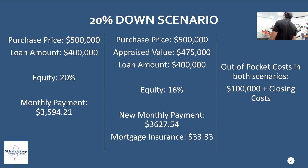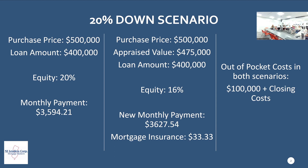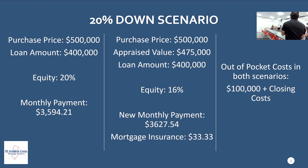That's the 20% down scenario. The big thing everybody asks is: do I have to come out of pocket extra? You are coming out of pocket for the same amount — $100,000 down plus closing costs — nothing is changing in terms of how much money you were prepared to spend from the beginning.